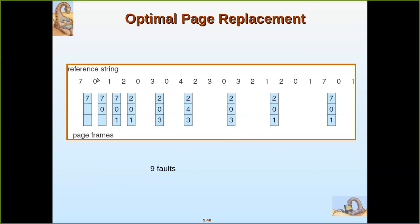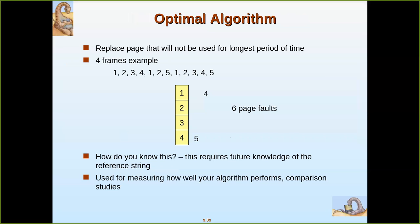What is the drawback? You must have knowledge of when a page has to be replaced — specifically, when each page will be referenced next in the future string. Only with that future knowledge can you apply the optimal algorithm. That is the problem with this algorithm. So where can it be applied? When you are writing your own algorithm and want to compare how it functions, you can compare it against the optimal algorithm. The optimal algorithm gives the best possible result, so it can be used as a benchmark for comparison studies.